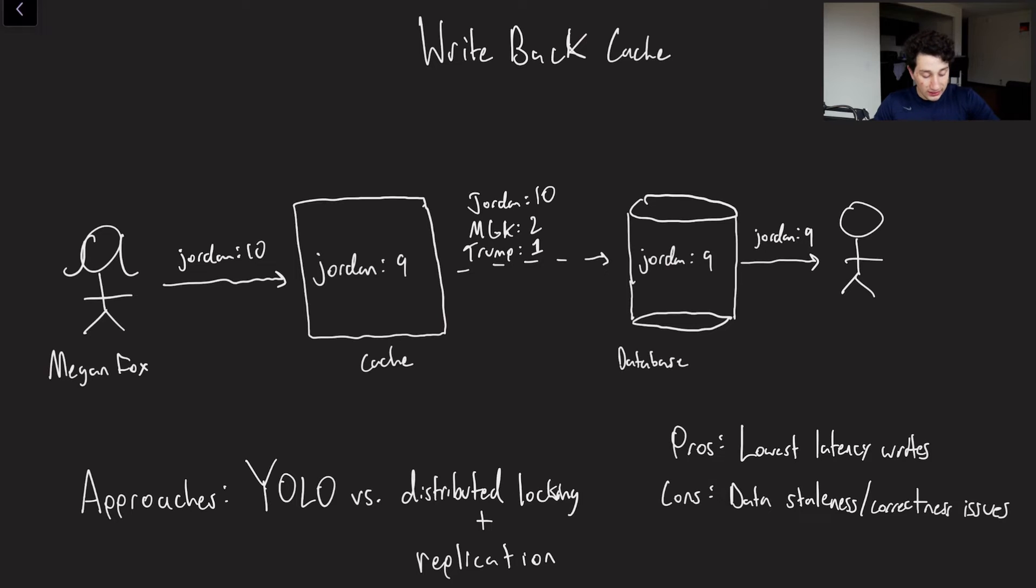So the last approach that we're going to be talking about is the write-back cache. Why is it called write-back? Because first, when Megan Fox over here, yet another baddie, decides that I'm a 10 out of 10, the first thing that's going to happen is we write to the cache. And then at some point down the line, or better yet, let's say asynchronously, we'll eventually write that back to the database. And then the database can go ahead and update that value. But there's no guarantees on when that gets written.